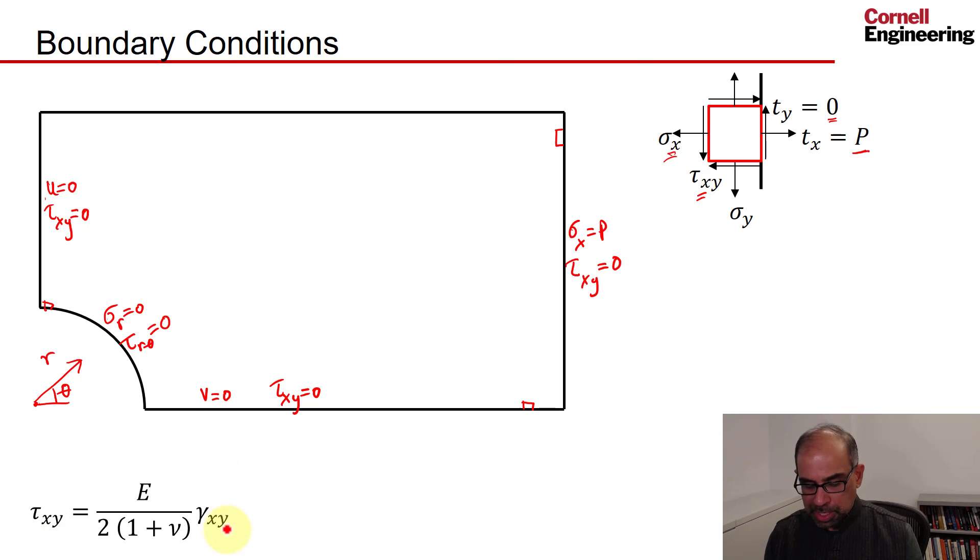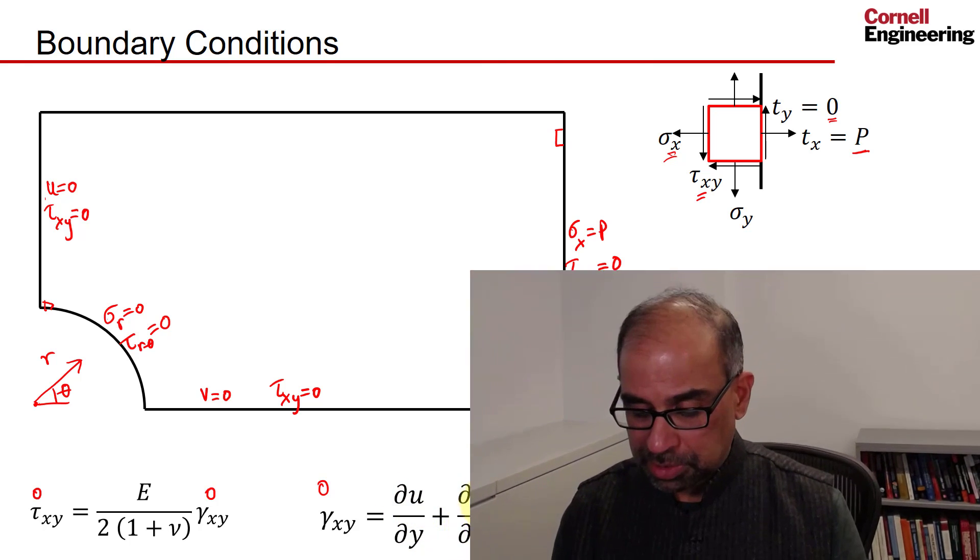Tau xy is related to the shear strain by this equation, which we saw in the stress-strain relationship. So if tau xy is zero, then gamma xy, the shear strain, has to be zero. But gamma xy is related to the derivatives of the displacement. So if gamma xy is zero, this whole thing is zero. So this boundary condition essentially filters down to boundary conditions on the derivatives of the displacement.